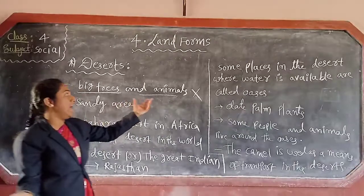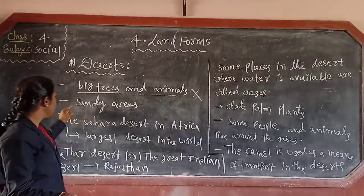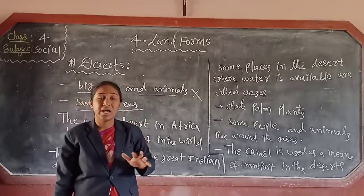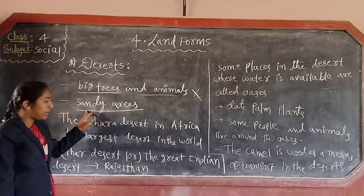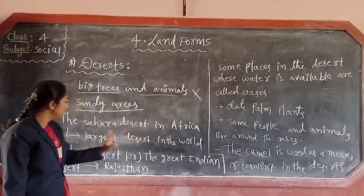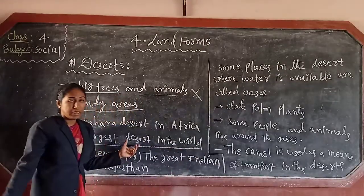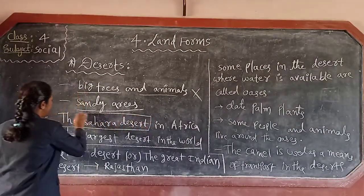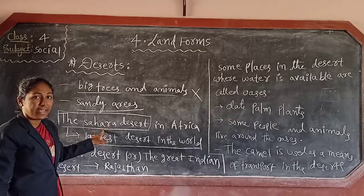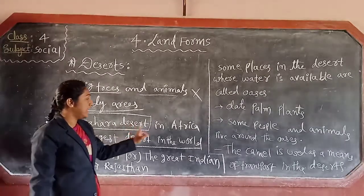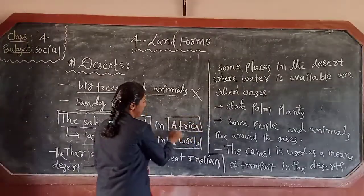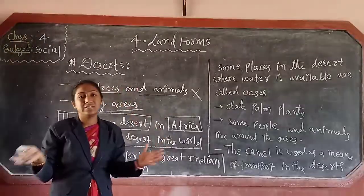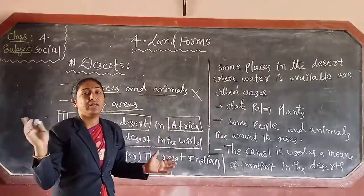The Sahara Desert is mostly a sandy area — these areas are completely covered by sand. This is a very important fact, also a general knowledge question. The Sahara Desert is located in Africa, in the African continent, and it is the largest desert in the world — the biggest desert in the world.